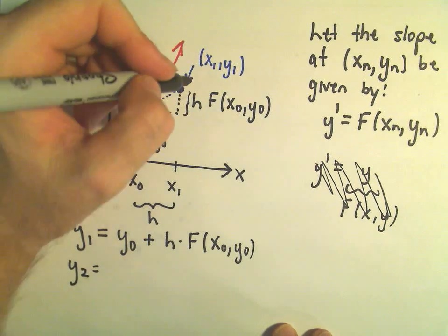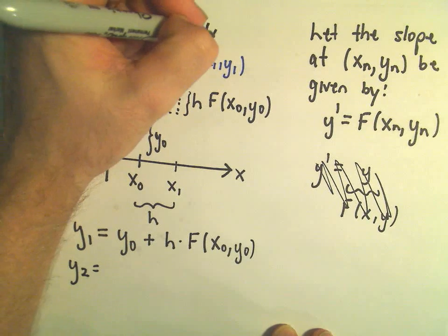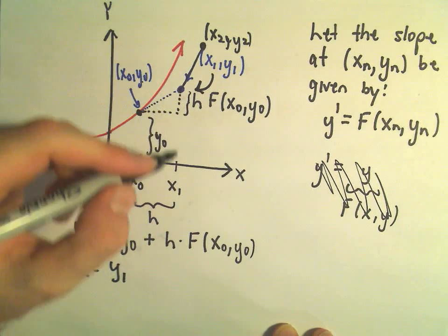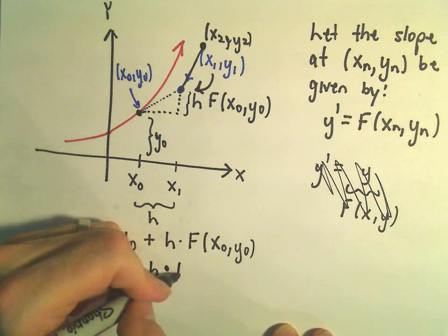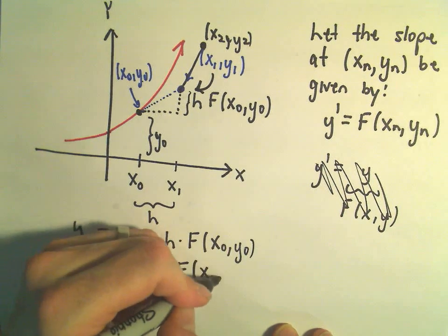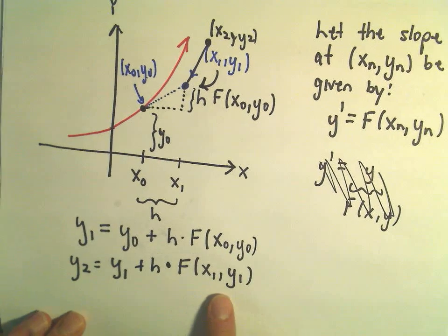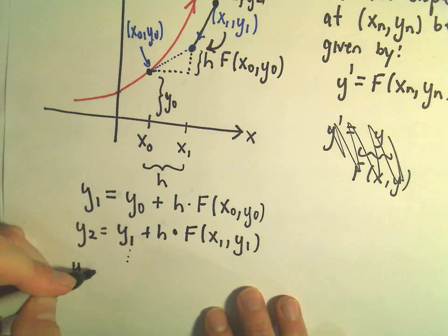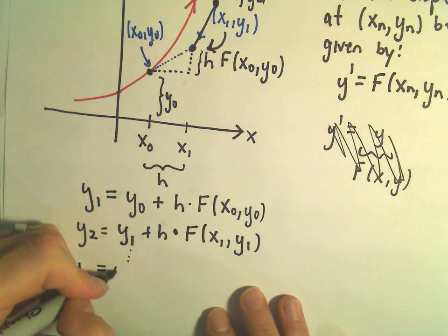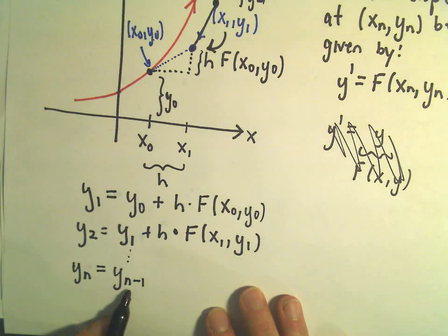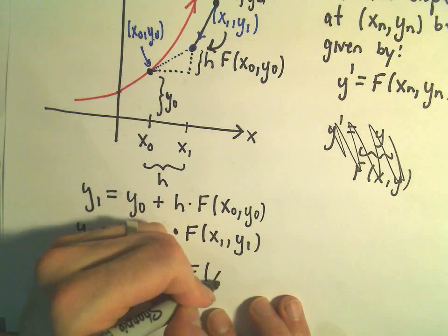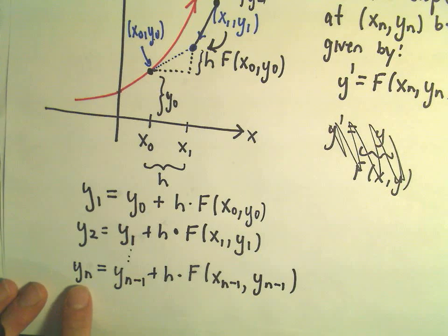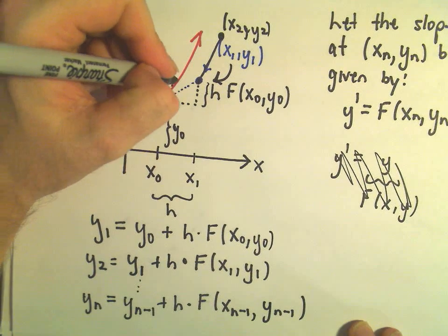Likewise, to get y-sub-two — the next point — we would take our y-sub-one value and again take our step size, but now multiply it by f(x-sub-one, y-sub-one), which is just the slope of the tangent line at this new point. Generically you can show that the nth y value is: y-sub-(n+1) equals the previous y value y-sub-n plus h times f(x-sub-n, y-sub-n), and that's going to approximate your nth y-value on your solution curve.